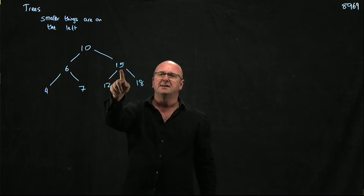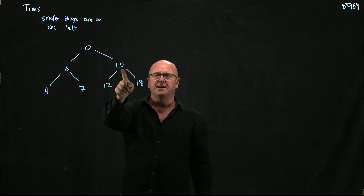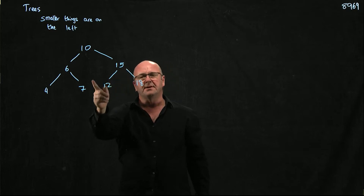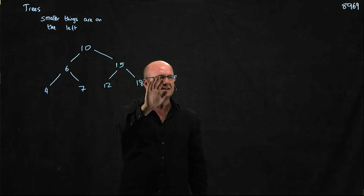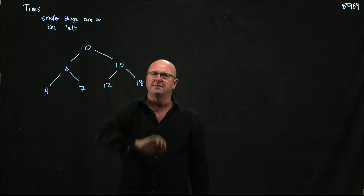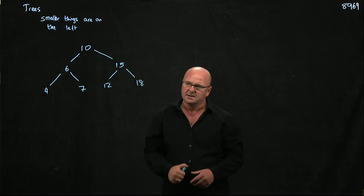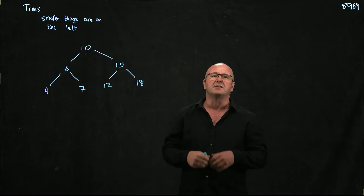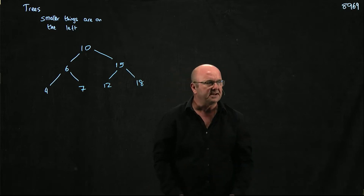We go to the 15. Is the 12 bigger or smaller than the 15? It's smaller, so we go to the left. We ignore the 18 — we don't have to look at any of that data. That gives us log n complexity to go down through the tree.